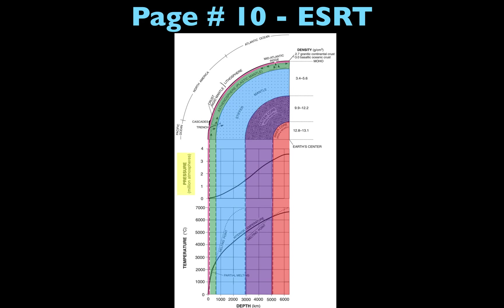There's information about pressure — the units for pressure are million atmospheres — and we have our data line highlighted in yellow, which is where you go to get information from that specific graph. On the bottom part we have temperature, with units in degrees Celsius, and we highlight the data line where you get information for temperature. Both of these graphs share one x-axis, which is depth in kilometers, going from the crust all the way to the inner core as depth increases.